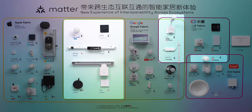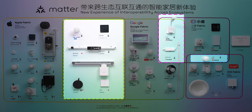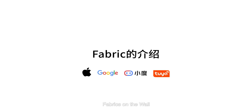Matter also has a feature called multi-admin. A device can join multiple fabrics — that is, multiple ecosystems — at the same time, giving users more choices and richer experiences.